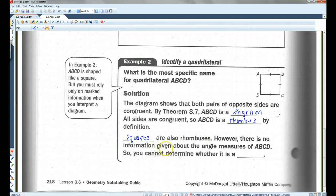Squares are also rhombuses. However, there is no information given about the angle measures. We don't know if these are right angles. They look like right angles, but because it's not labeled, we cannot assume. So you cannot determine whether it is a square. All you can say is that it's a rhombus.